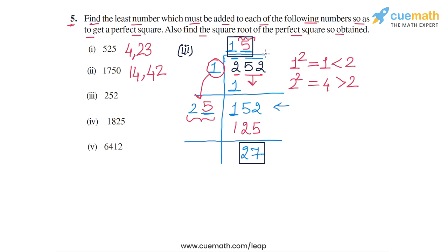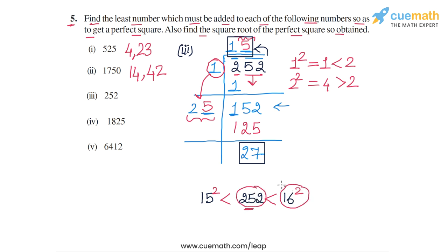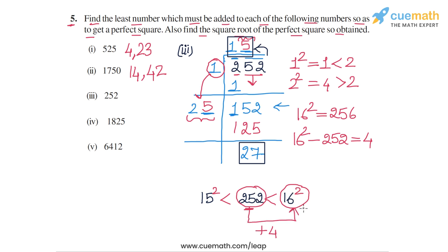This means the largest number whose square is less than 252 is 15, and the smallest whose square exceeds 252 is 16. So 252 lies between 15² and 16². The smallest number to add to 252 is 16² − 252 = 256 − 252 = 4. If we add 4 to 252, we get 256 = 16². The answer for part 3: add 4, and the square root of the resulting perfect square is 16.